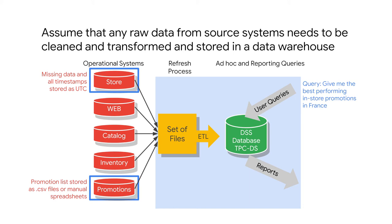Let's say you're a retailer and you have to consolidate data from multiple source systems. If the use case is to get the best performing in-store promotions in France, you need data from the stores and from the promotions. You might find that the store data is missing some information — maybe some transactions are in cash with no customer information, or some transactions are spread over multiple receipts and need to be combined. Perhaps timestamps are stored in local time, so you need to convert everything into UTC.